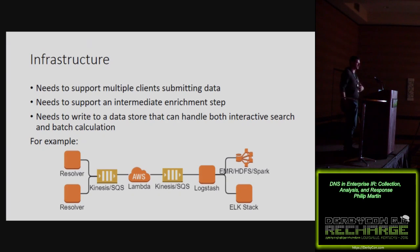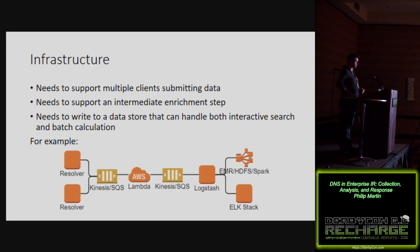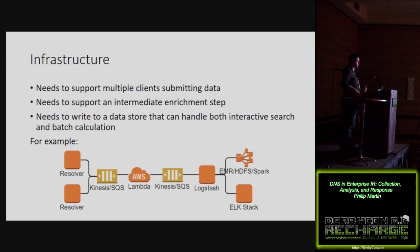DNS data is one of those sources that benefits significantly from enrichment. Basic enrichments like WHOIS data and DNS RBLs or blacklist data on log records make them immensely more useful during analysis. My preferred architecture is two queues with an enrichment phase in between, writing out to both an Elasticsearch cluster and a Spark EMR cluster on the backend. This lets me do both the quick question-answer style queries and complicated bulk processing.